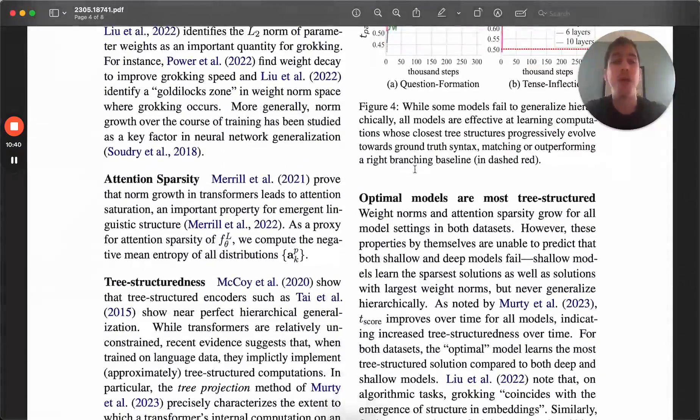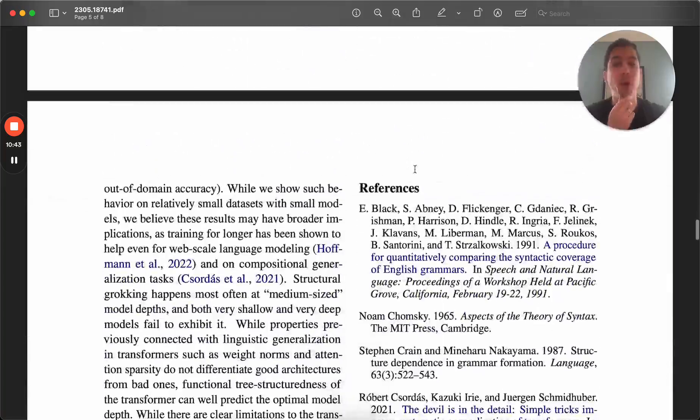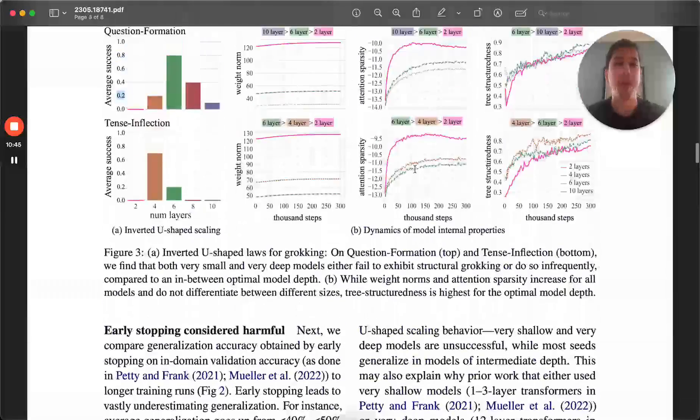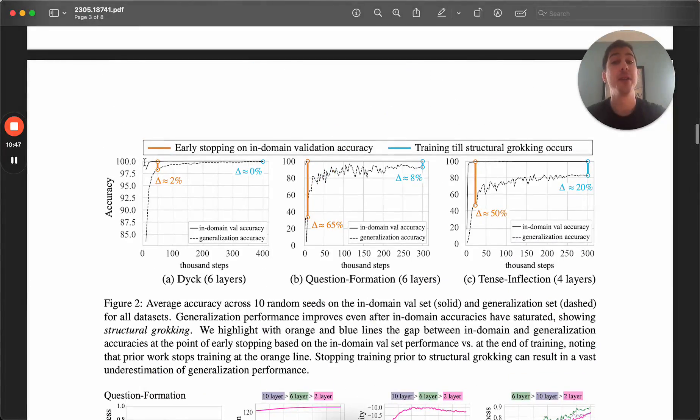So overall, I think this is a very neat paper. It pushes the expectation beyond just hitting your validation accuracy and stopping. And you should always be considering, does this model generalize beyond the simple task that I have for it? So that's why I think this is a particularly interesting paper for people who are actively training models. You want to think about, should you be checking for grokking or not?